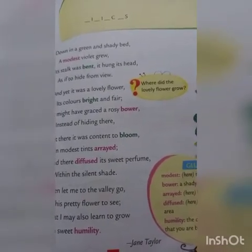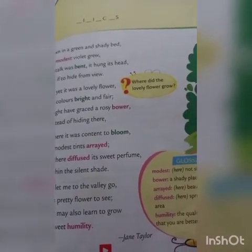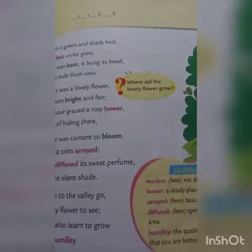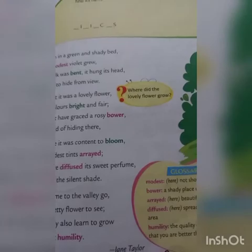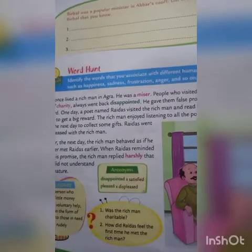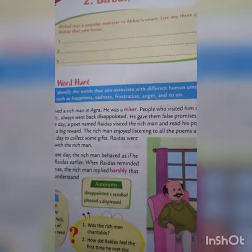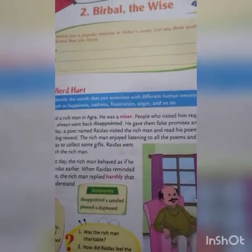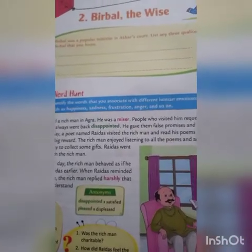The violet could be grown in a beautiful or well-arranged place, but it is hiding instead. Despite its beauty, it is showing its modesty and satisfaction. I will send you the questions and exercises to WhatsApp. Now let us move on to the next chapter from our Term 2 textbook.